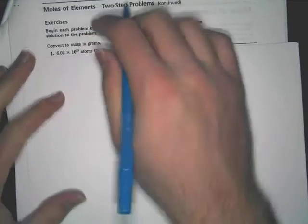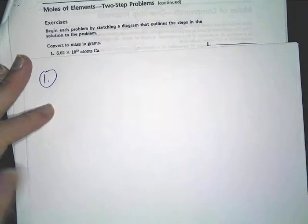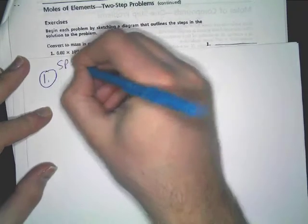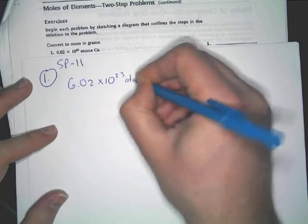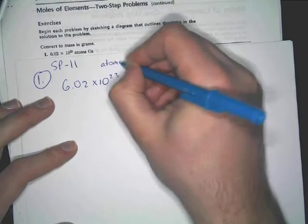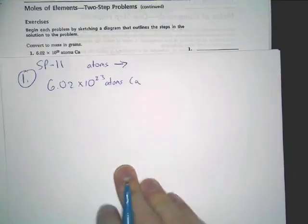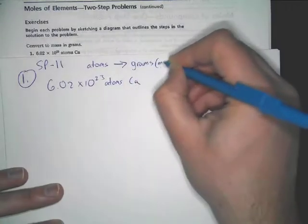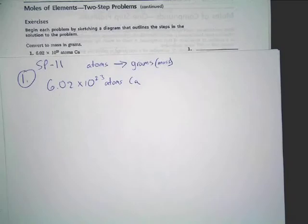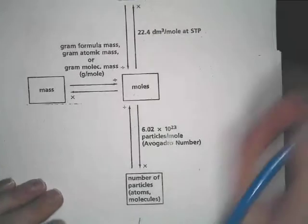Now let's actually start this. So we've got number one here. This is on SP-11. Now we've got 6.02 times 10 to the 23rd atoms of Ca. Now this wants you to go from atoms, and if you read this it wants you to go from atoms to grams, which is mass.